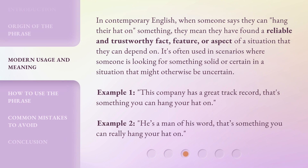In contemporary English, when someone says they can 'hang their hat on' something, they mean they have found a reliable and trustworthy fact, feature, or aspect of a situation that they can depend on. It's often used in scenarios where someone is looking for something solid or certain in an uncertain situation. For example: 'This company has a great track record — that's something you can hang your hat on.'